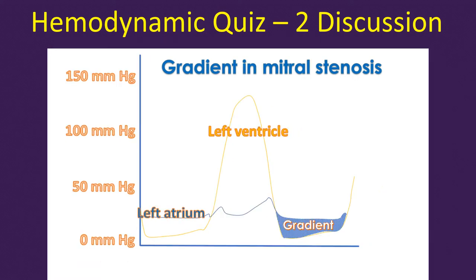Mean gradient across the mitral valve can be calculated using the electronic caliper and will give an assessment of the severity of mitral stenosis. Higher the gradient, the greater the severity of mitral stenosis.